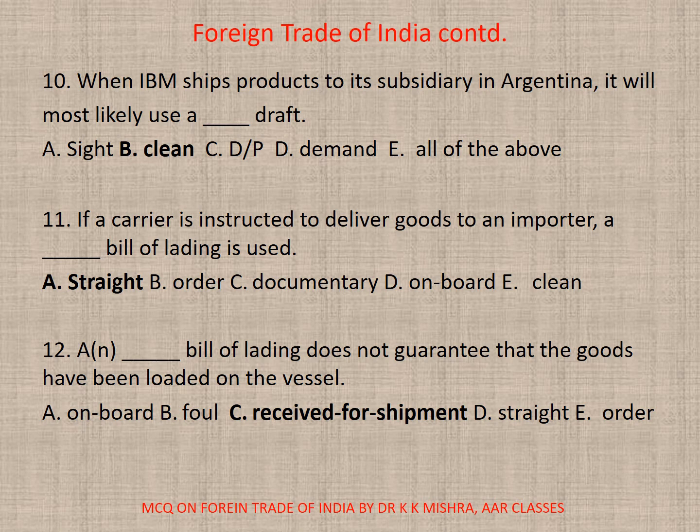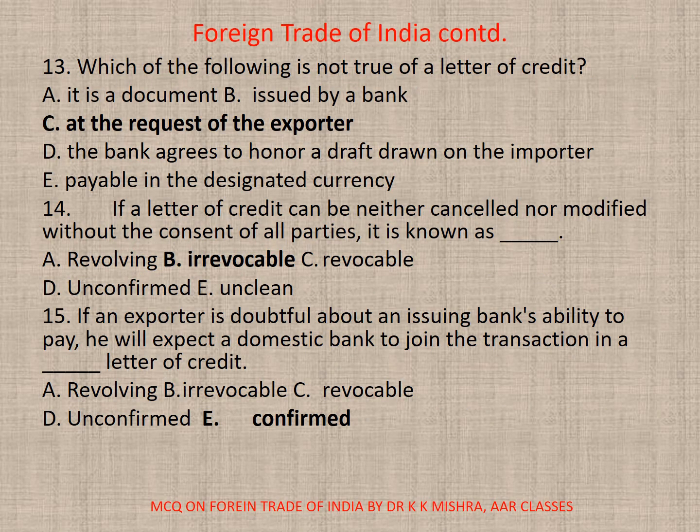Question 12: A or N dash bill of lading does not guarantee that the goods have been loaded on the vessel. The correct option is C — Received for shipment. Question 13: Which of the following is not true of a letter of credit? The correct option is C — at the request of the exporter.